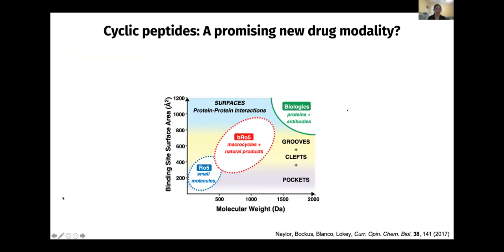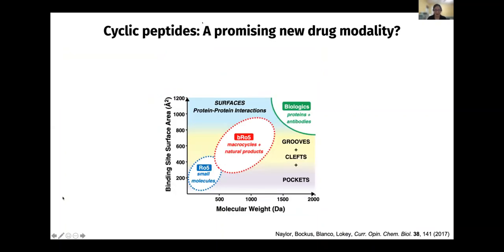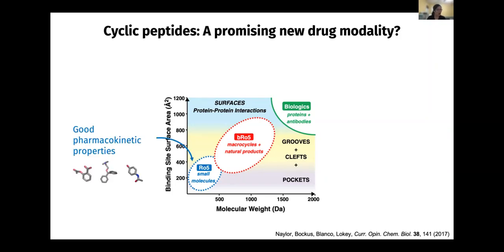Why are we interested in cyclic peptides? Here is a diagram that shows the currently available categories of drugs. On the bottom left, we have small molecules — RO5 means Rule of 5. Small molecule drugs, like ibuprofen or Tylenol, can actually be taken by mouth, so we say that they have very good pharmacokinetic properties.